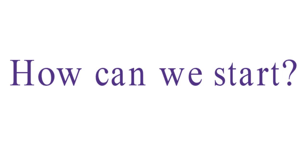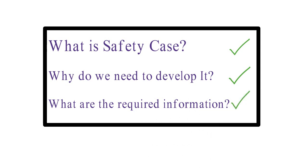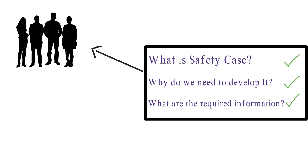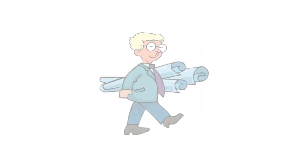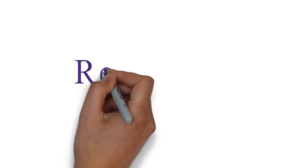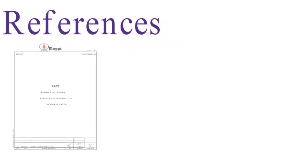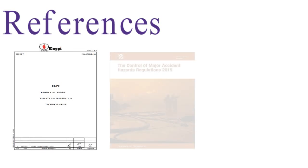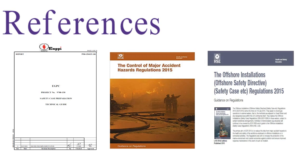Now to the last and most important part — how to start and what are the main references? After understanding what a safety case is, why we need to develop it, and what information is required, we need to: first, identify those who are qualified to collect information and participate in the required studies; secondly, determine what information is available and what is missing. Then we can develop our action plan and execute it either by internal resources or through a consultant with expertise. Useful sources include the EGPC Technical Guide for Safety Case Preparation, Control of Major Accident Hazards — COMAH 2015 — for onshore facilities, and Offshore Safety Case Regulations 2015 for offshore facilities.